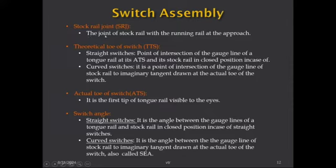The stock rail joint is defined as the joint of the stock rail with the running rail at the approach. The first joint of the points and crossing at the approach is called the stock rail joint because the joint is connected to the stock rail. For the theoretical toe of switch in straight switches: it is the point of intersection of the gauge line of the tongue rail at its ATS and the stock rail in closed position.